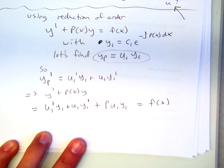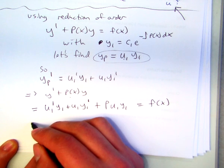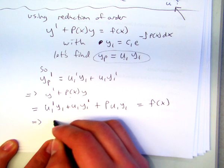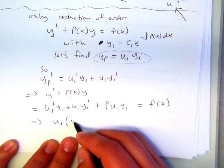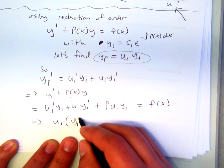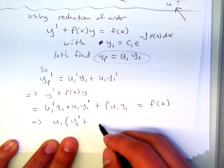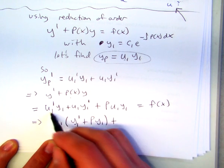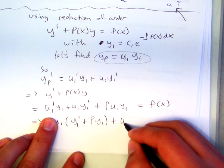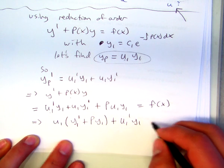So now what we can do, if we factor out u1, we get y1 prime plus py1 plus our original first term, u1 prime y1. And that should equal f of x.